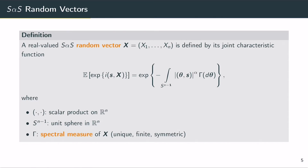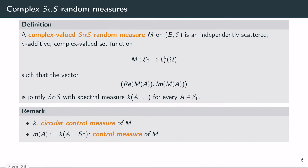Now we can move on to symmetric alpha stable random measures. In particular we're interested in the complex valued case. We denote our measure by M, which is a set function that is independently scattered, sigma additive, and complex valued. It maps from the space epsilon zero to the space LC, which is simply the space of complex valued random variables on a probability space omega F P.